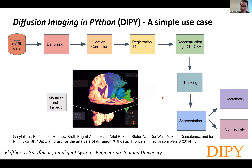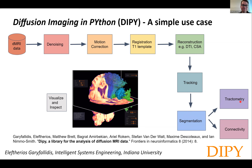Here is a simple use case. Imagine you have some diffusion data and you want to denoise them, do motion correction, register with the T1, then do signal reconstruction with DTI, QBALL, CSA, or any other reconstruction method, then do some tracking — deterministic, probabilistic, or different sorts of tracking — and do segmentation of the tractography. Then maybe you want to do connectivity analysis or go directly to tractometry, which is the study of the brain's pathways along their length. You can do all of those things with DIPY.